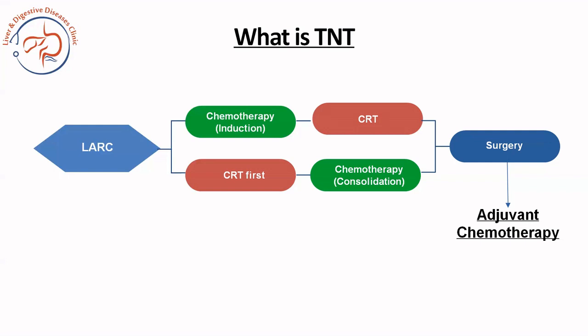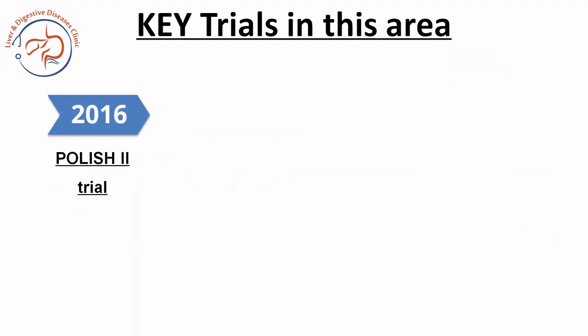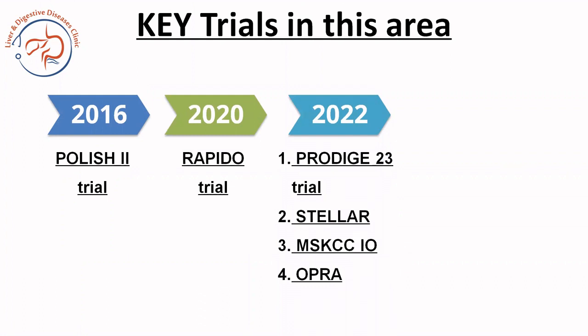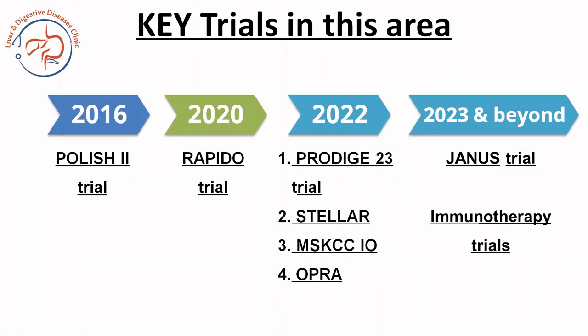This is how the entire treatment pathway in locally advanced rectal cancer is changing. Rather than mandating surgery for all patients, the aim is to give complete therapy before surgery to achieve a pathological complete response, thereby selecting patients who may escape surgery and go into close surveillance — an approach known as watch and wait. Key trials in this area began aggressively in 2016 with the POLISH-2 trial, then the RAPIDO trial in 2020, and in 2022 a list of trials: PRODIGE-23, STELLAR, the MSKCC immunotherapy trial, and the OPRA trial.